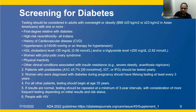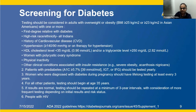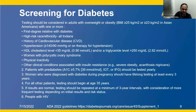Who should be screened for type 2 diabetes? Testing should be considered in adults with overweight or obesity with a BMI greater than 23 kg/m² — the cutoff for Indians, versus 25 for Caucasian and African American populations. Other criteria include a first-degree relative with diabetes, high-risk race and ethnicity, history of cardiovascular disease, hypertension above 140/90 or on medication, HDL cholesterol less than 35, triglycerides greater than 250, and women with PCOS.